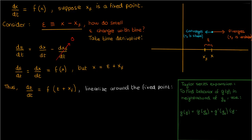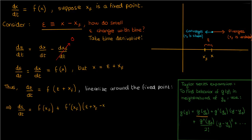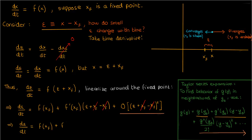The Taylor expansion is: g(y_0) + g'(y_0)(y - y_0) + g''(y_0)/2! × (y - y_0)² and the series continues. If we want to find the behavior of d(epsilon)/dt in the neighborhood of the fixed point x_f, we apply this Taylor expansion: d(epsilon)/dt equals f(x_f) + f'(x_f)·epsilon + O(epsilon²), where the O(epsilon²) term denotes all terms in the Taylor expansion where the power on epsilon is greater than or equal to 2. Once we simplify and cancel the x_f terms, we get the linearized expression.